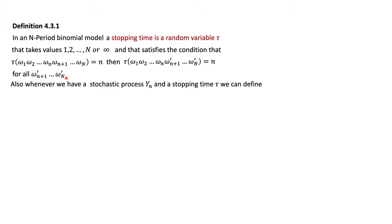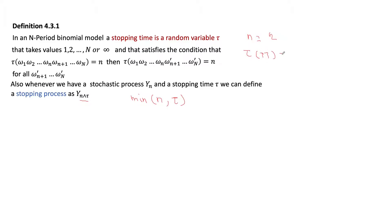When we have a stochastic process Y_n and a stopping time τ, we can define a stopped process. The stopped process is defined as Y_{min(n, τ)}, taking the minimum between time n and the random variable τ. For example, if n equals two and τ(TT) equals one, then the stopped process at time two along path TT is Y_{min(2,1)} = Y_1.